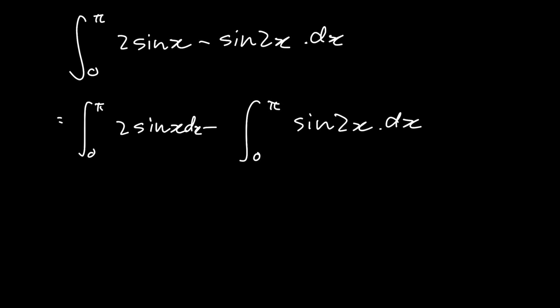This integral is easy to solve because the integral of sin(x) is -cos(x). So we have -2cos(x) from 0 to π minus...